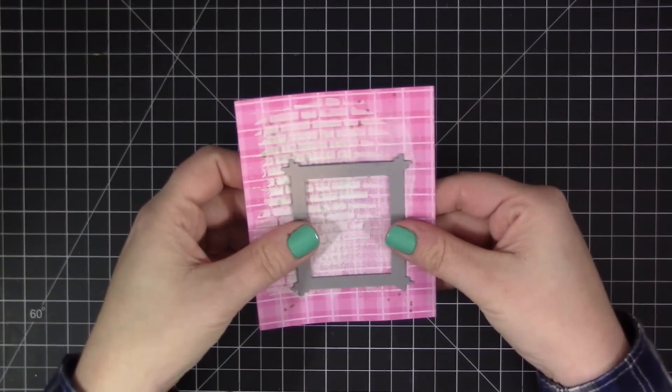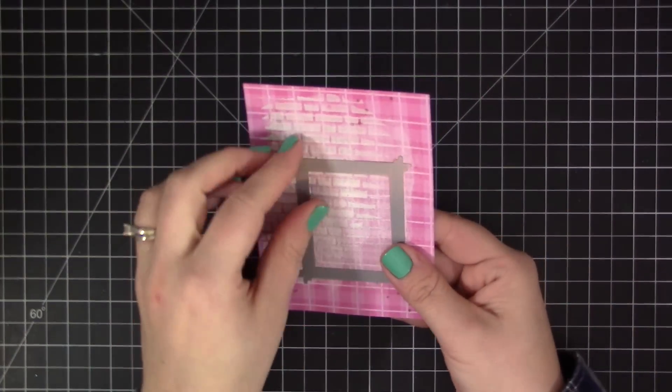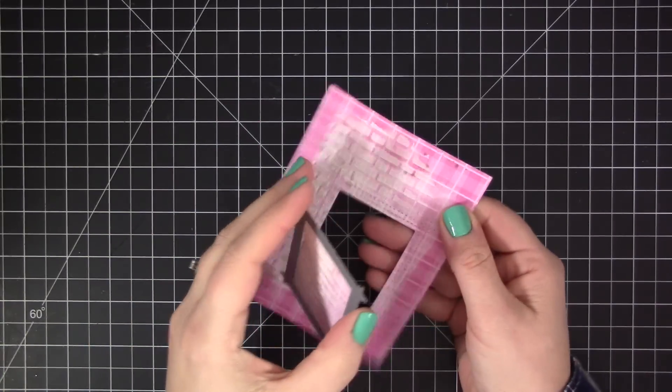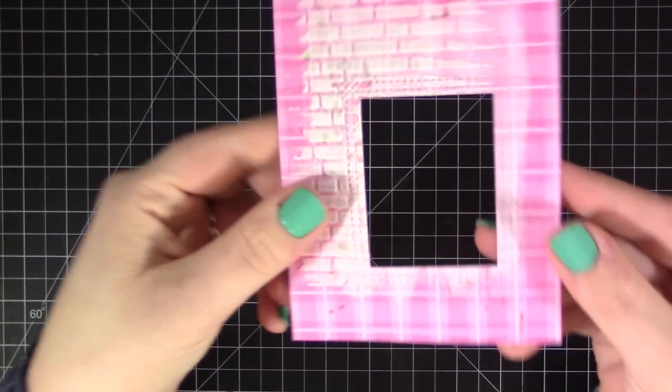Now once the embossing paste is dry, I'm going to die cut this new Rectangle Peekaboo Window Dynamic from the bottom right-hand area of this pattern paper piece. That's why I kind of left that brick detail at the top left area—just because I knew that there'd be an opening there and I wanted to be able to see a lot of that brick detail.